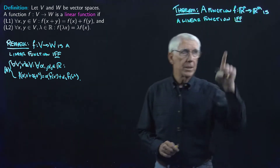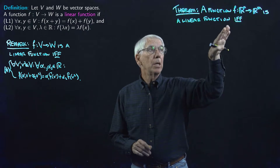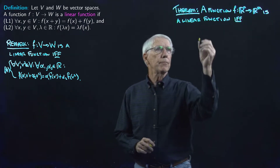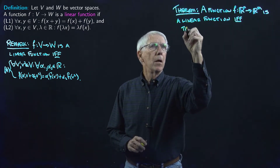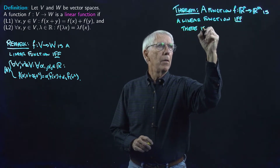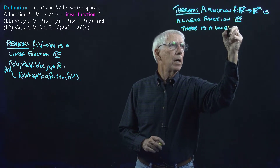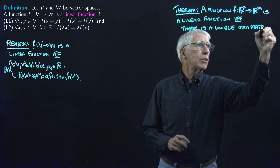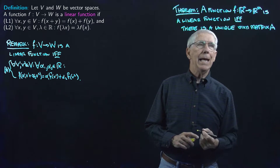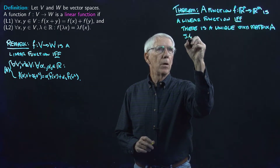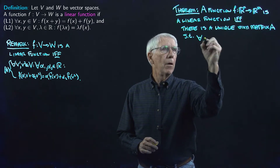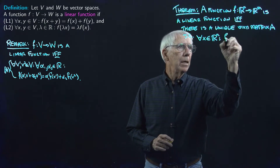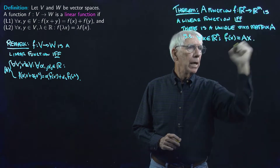if and only if—that's actually an important part of this, because it's critical if this is going to be a characterization theorem—if and only if there is a unique M by N matrix A such that for all x in the domain, all vectors in the domain, F of x equals A times x.